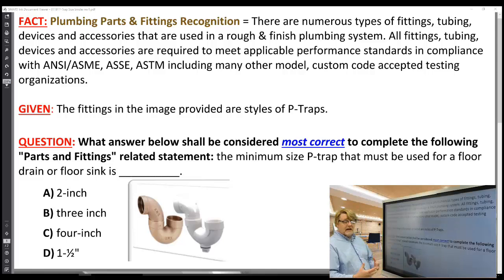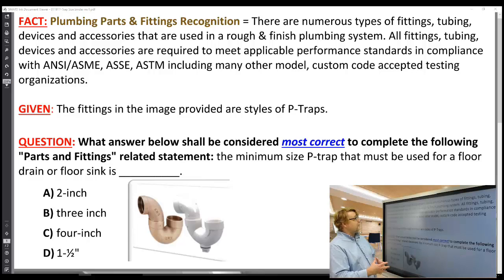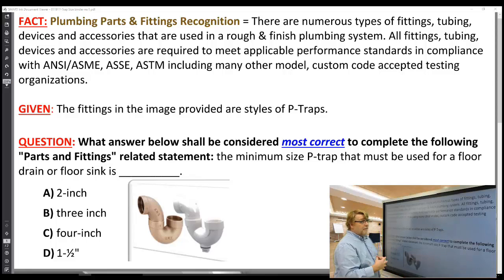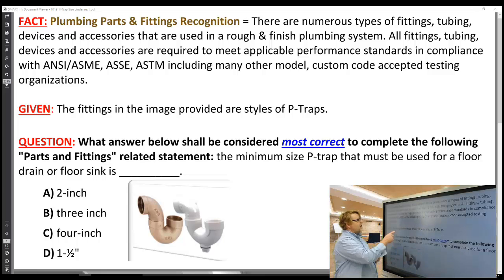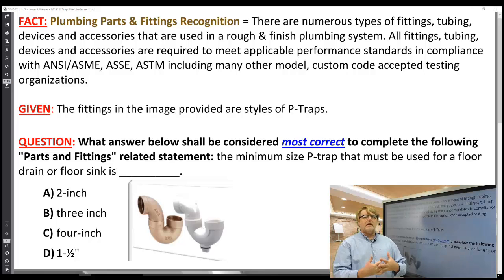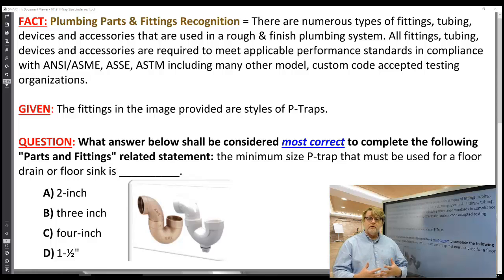Like last week with the PVC expansion joint, we're talking about plumbing parts and fittings recognition — just to give you an idea of what we're asking. There are numerous types of fittings, tubing, devices, and accessories used in rough and finished plumbing systems, and all of them are required to meet applicable performance standards in compliance with ANSI, ASME, ASSE, and ASTM, among many other model and custom code accepted testing organizations.